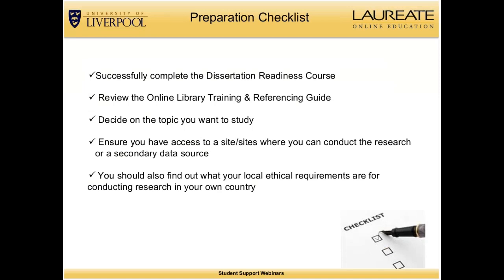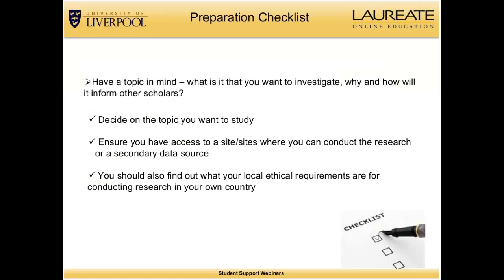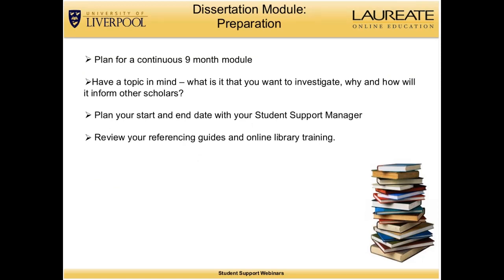You need to decide on a topic you want to study and ensure that you have access to a site or sites where you can conduct the research or a secondary data source. You should also find out what your local ethical requirements are for conducting research in your own country. Plan for a continuous nine-month module and think about what you want to investigate, why, and how it will inform other scholars in that field. Plan your start and end date with your student support manager and review your referencing guides and online library training.